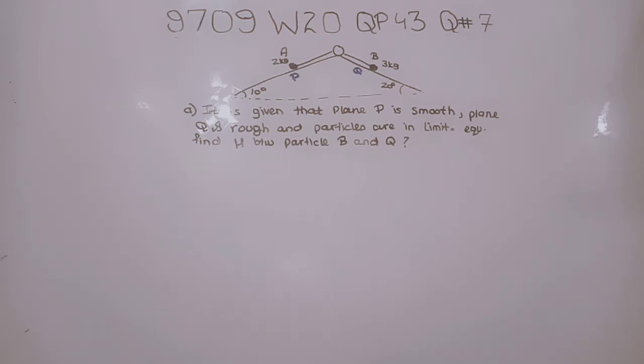The string is taut and the two parts of the string are parallel to the lines of greatest slope of their respective planes. Part A says plane P is smooth, plane Q is rough, and the particles are in limiting equilibrium. Find μ between particle B and Q.